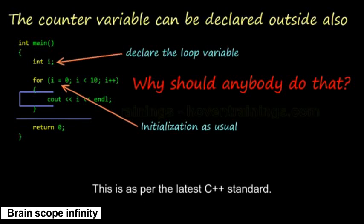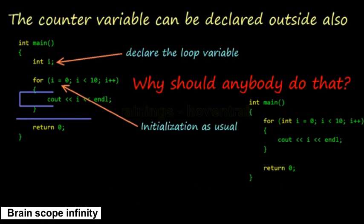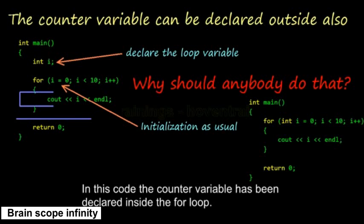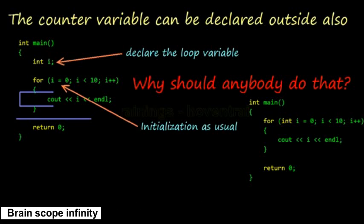This is as per the latest C++ standard. In this code the counter variable has been declared inside the for loop, so it is not available outside.